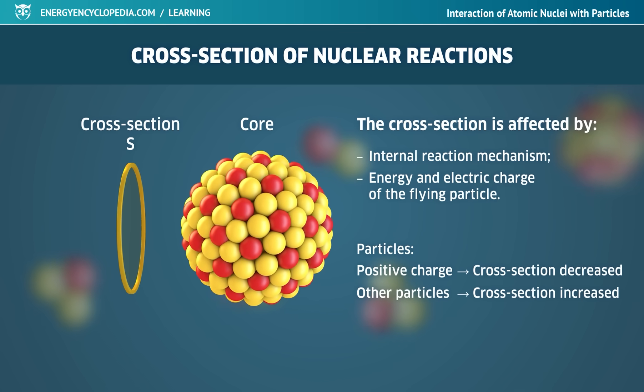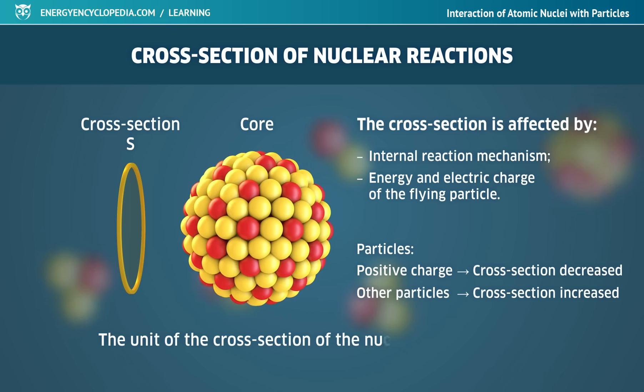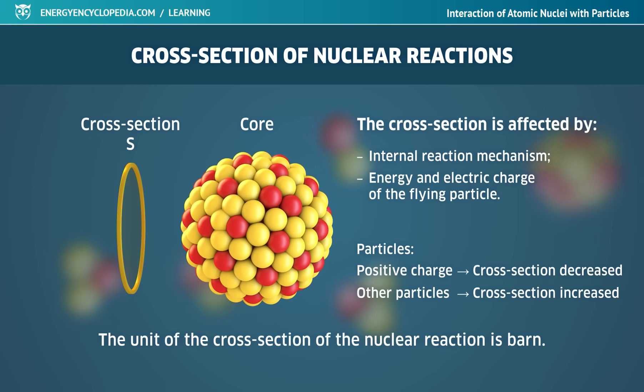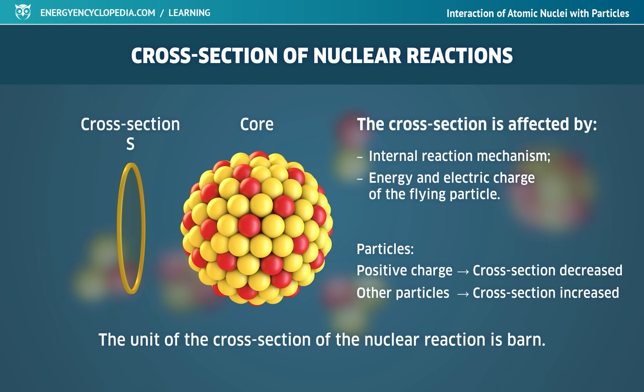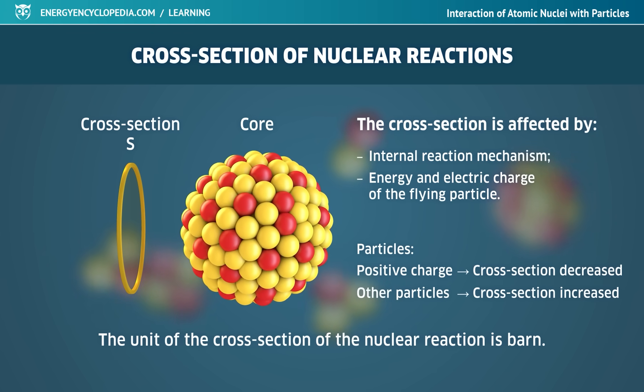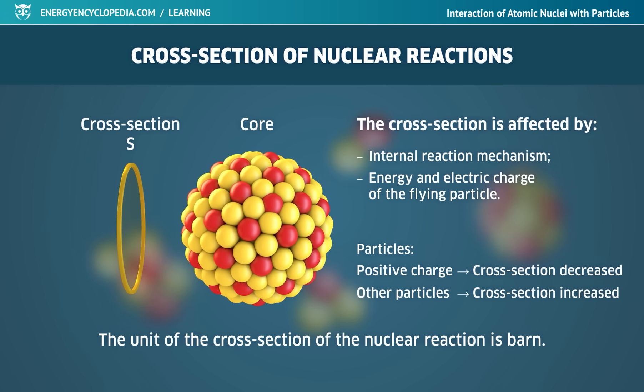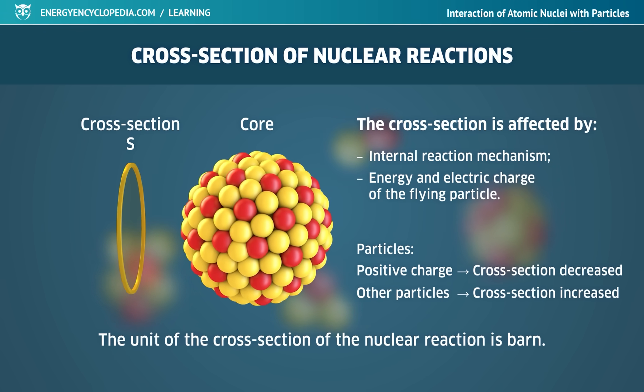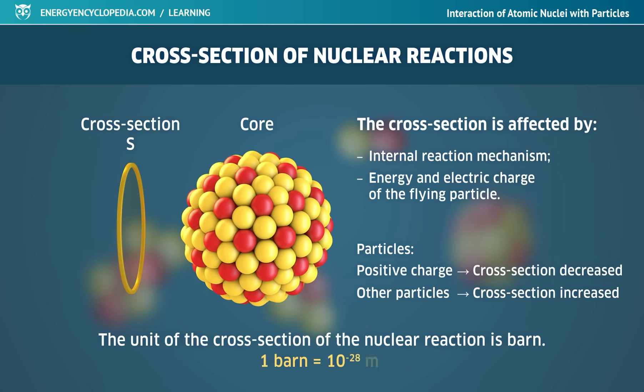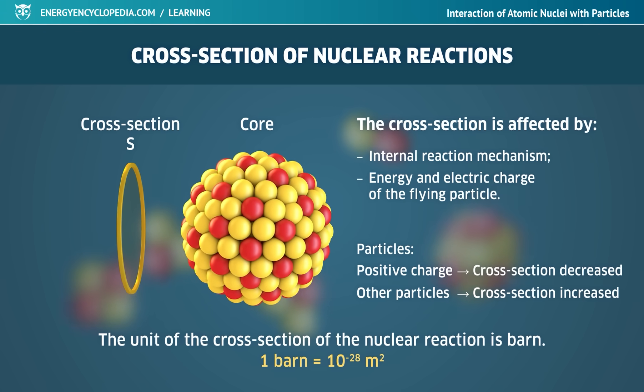For simplicity, the unit of the cross-section of the nuclear reaction is not the inadequately large square meter, but the more practical barn, which approximately corresponds to the geometric cross-section of the atomic nucleus of uranium. More precisely, one barn equals 10 to the minus 28th square meter.